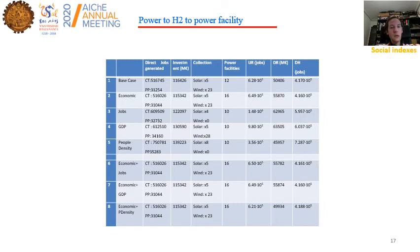Just to summarize, we have evaluated five cases: the first considers the allocation of 12 power facilities currently in place. However, if we target economics, the system looks for 16 facilities. If we target jobs, GDP, and population density, we target 10, but the size is changed accordingly. Basically, social solutions are more costly.